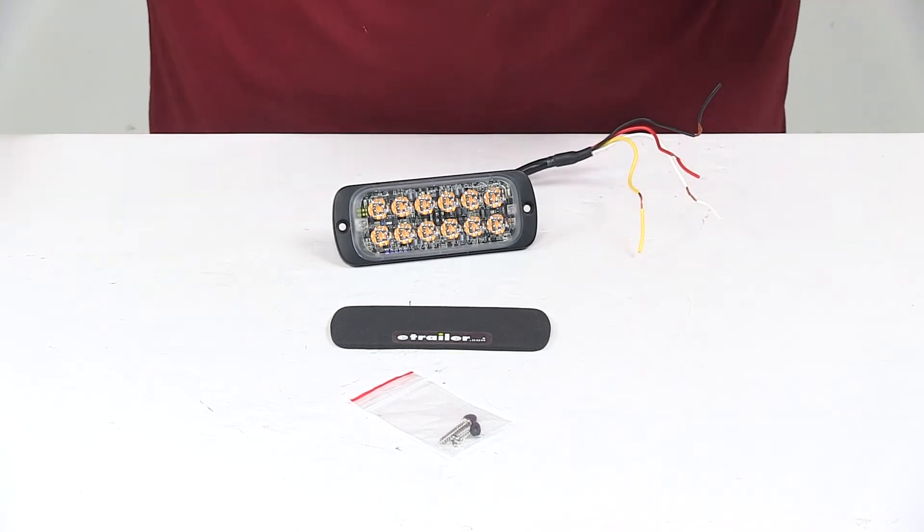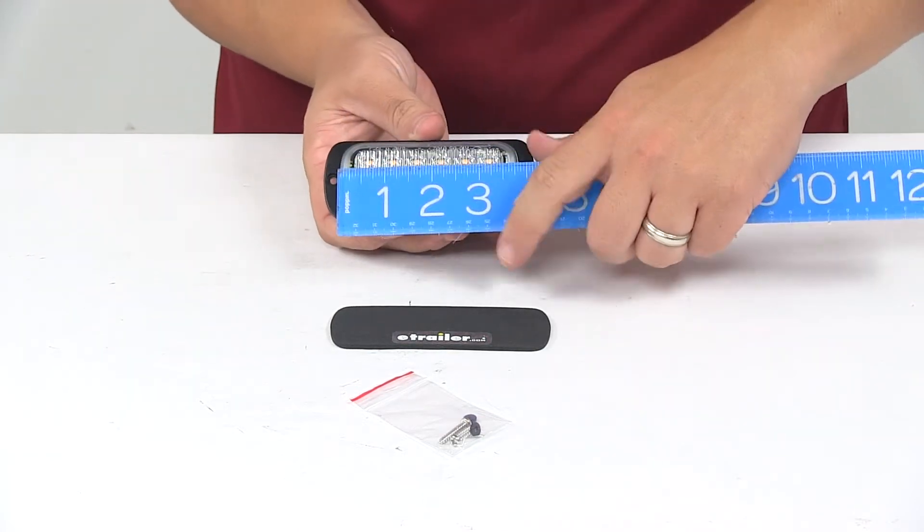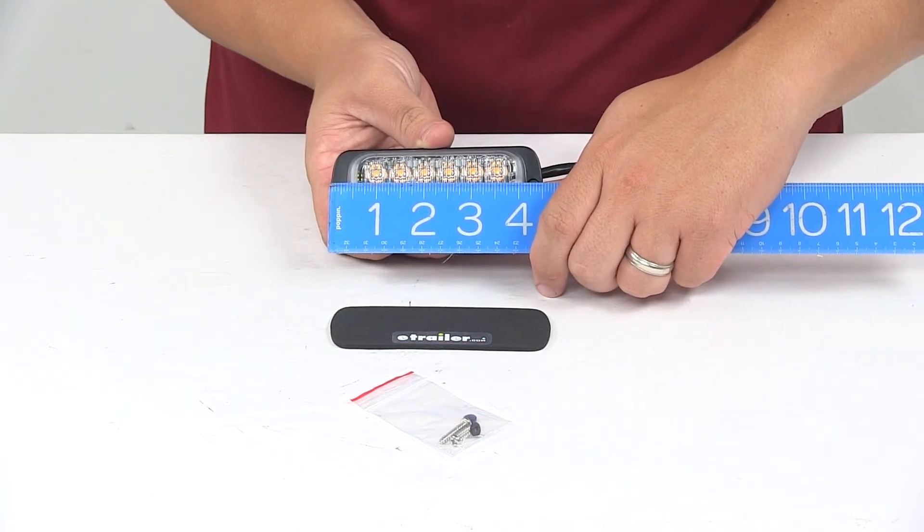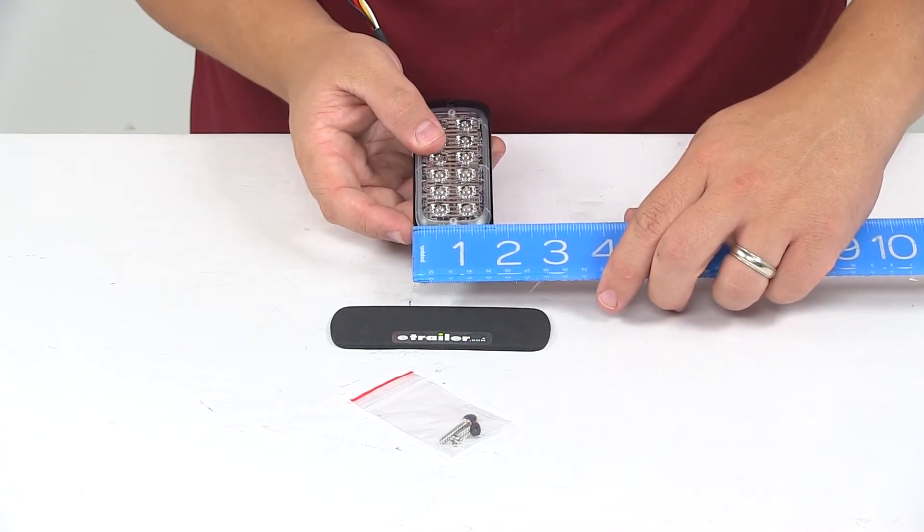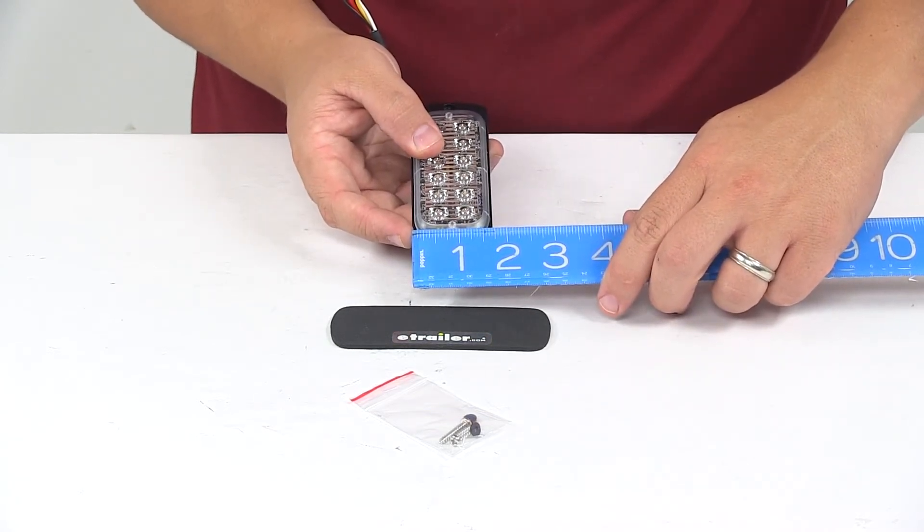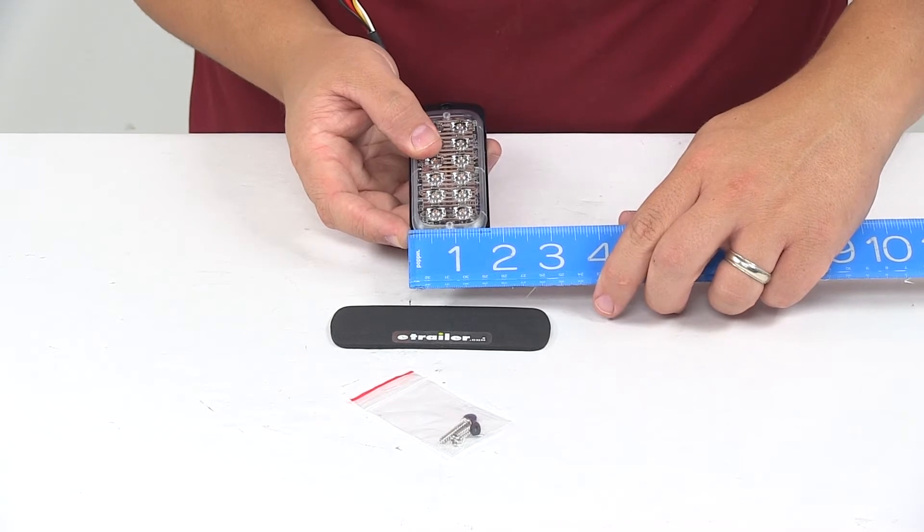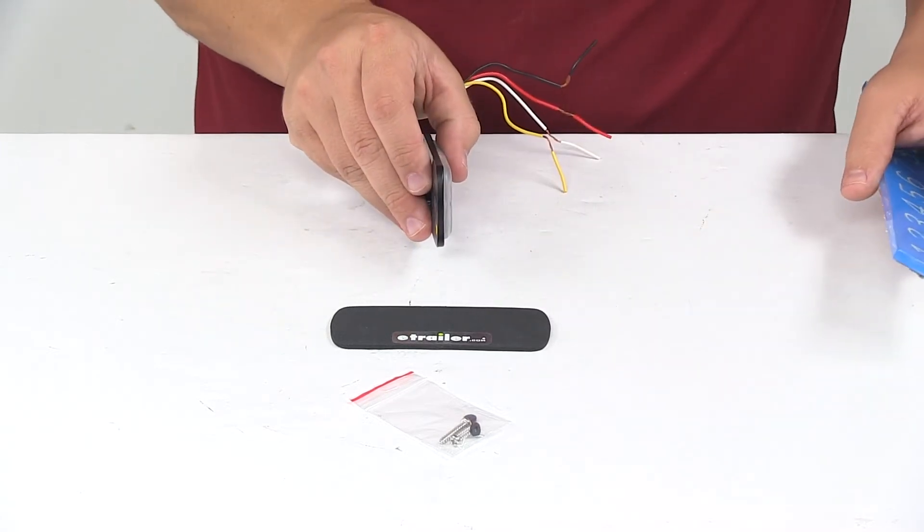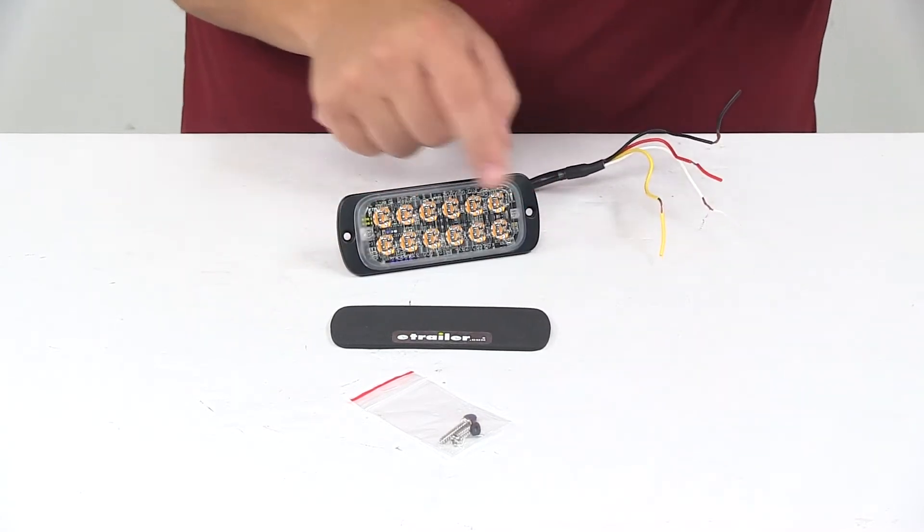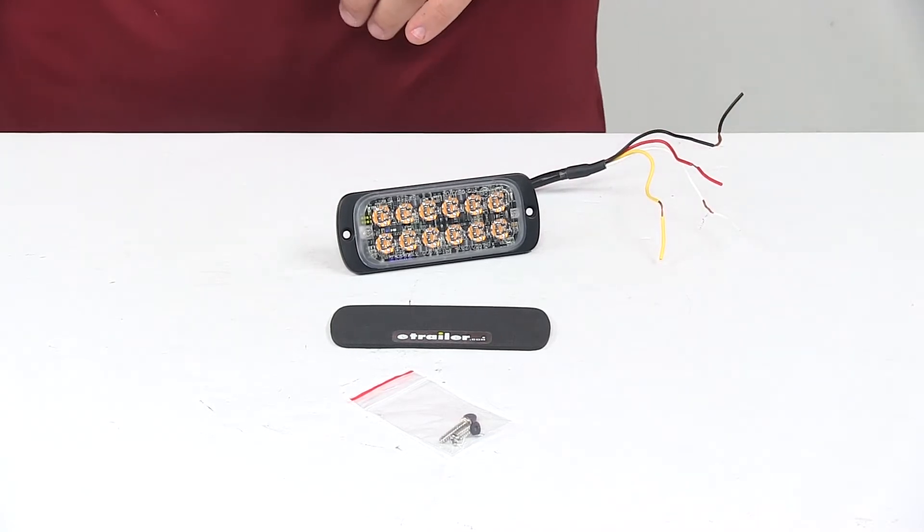Now when it comes to the dimensions of the unit, starting with the overall length measurement going edge to edge, it's about four and a half inches by one and three quarter inches. And then again, the thickness is three eighths of an inch. Mount holes on the unit are separated on center by about four and one eighth inches.